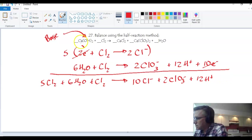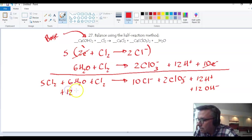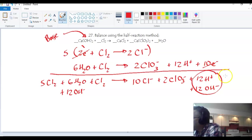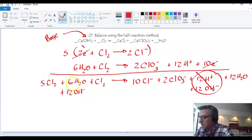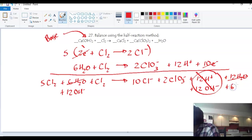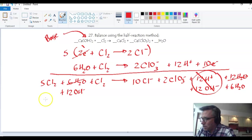Now since it's in basic solution, to account for that, for each H+, we add the same number of OH minus to both sides. And I'm going to point out that that makes 12 waters. And I'm also going to notice that I have 6 waters on the left and 12 on the right. So I'm going to cancel that. And I have a surplus of 6 H2O altogether. So that's all cleaned up.